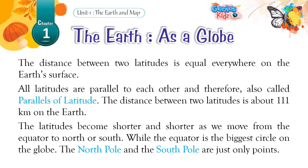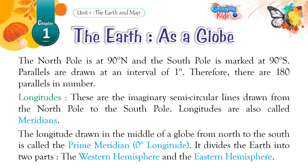The distance between two latitudes is equal everywhere on the Earth's surface. All latitudes are parallel to each other and are therefore also called parallels of latitude. The distance between two latitudes is about 111 kilometers on the Earth. The latitudes become shorter and shorter as we move from the equator to the north or south, while the equator is the biggest circle on the globe. The North Pole is at 90° N and the South Pole is marked at 90° S. Parallels are drawn at an interval of 1 degree, so there are 180 parallels in total.